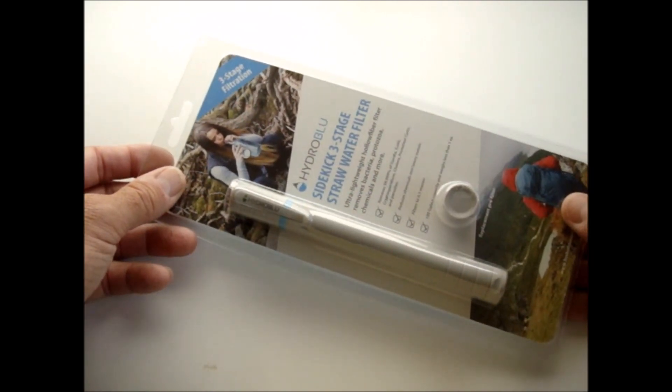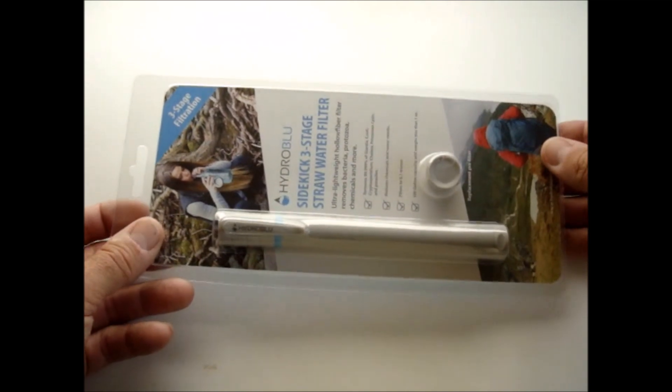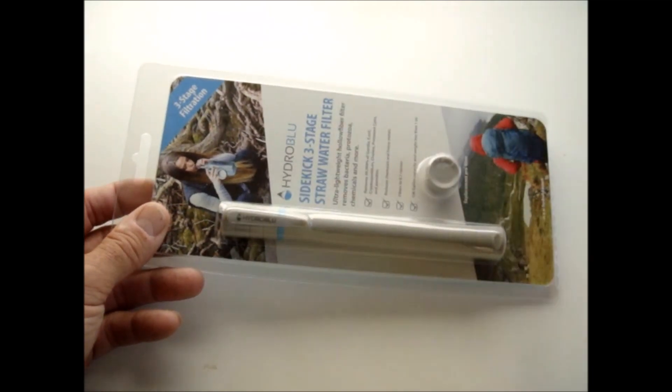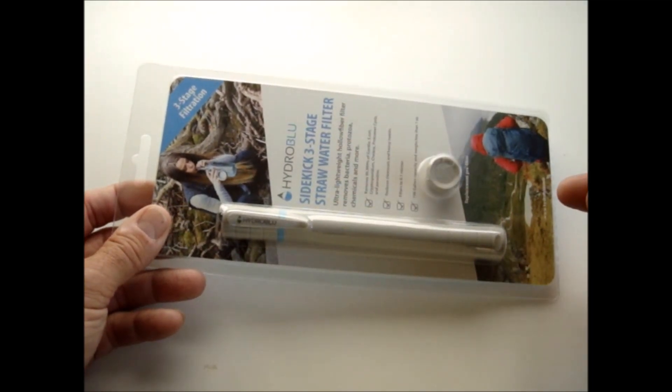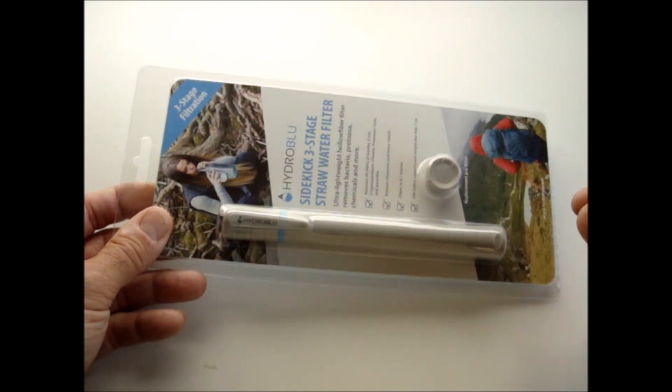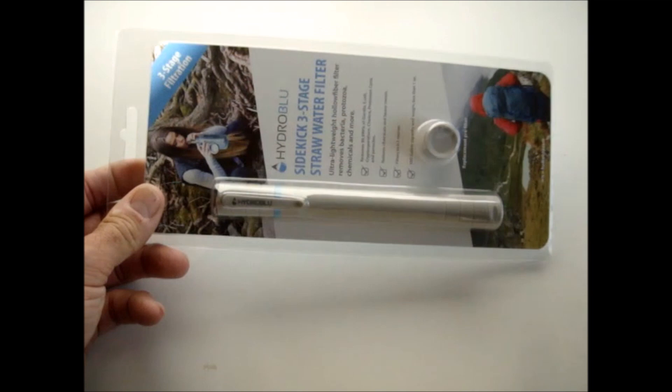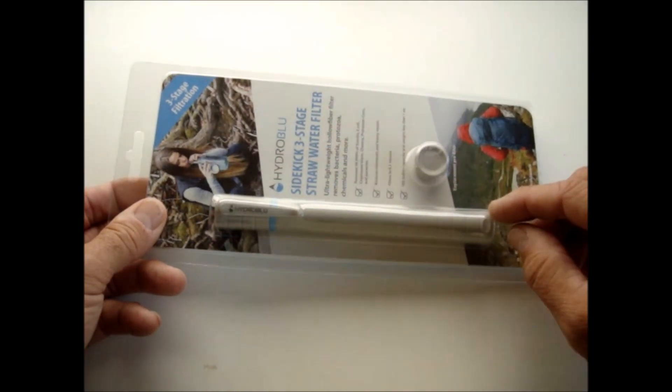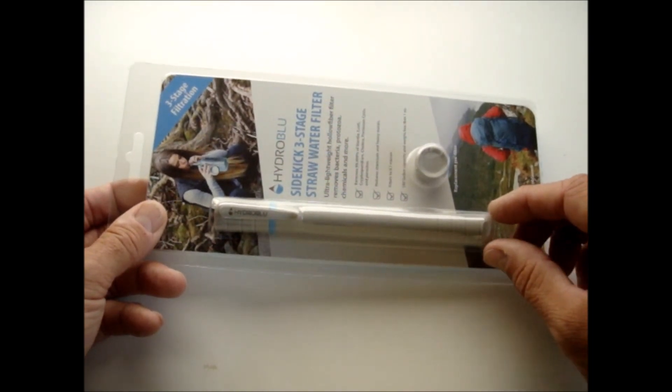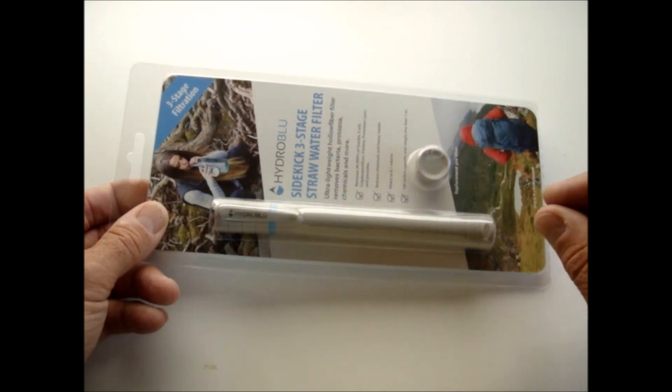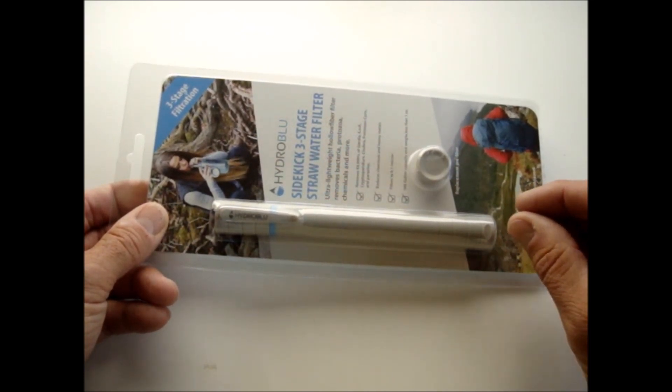They call it the Sidekick three-stage straw water filter. It's similar technology to the other filter with one small additional component - this little cap here, this little thing that goes on the end of the straw actually has a pre-filter and a little bit of activated charcoal.